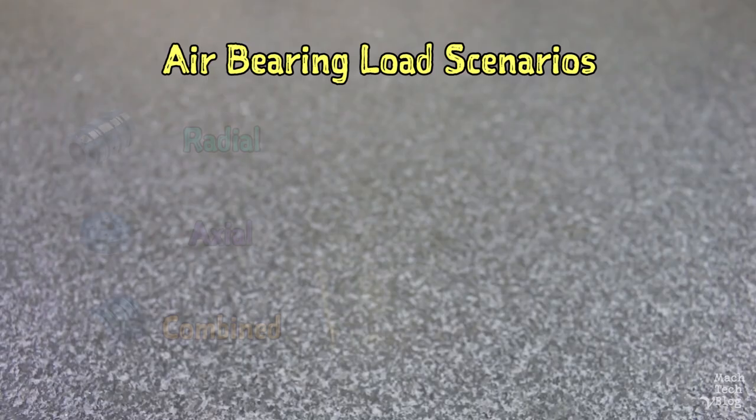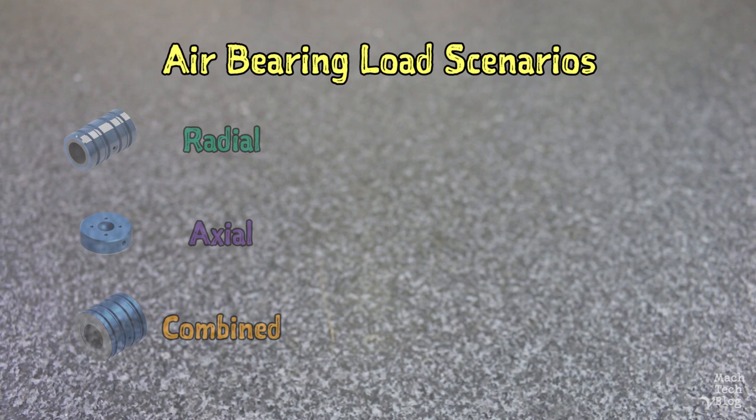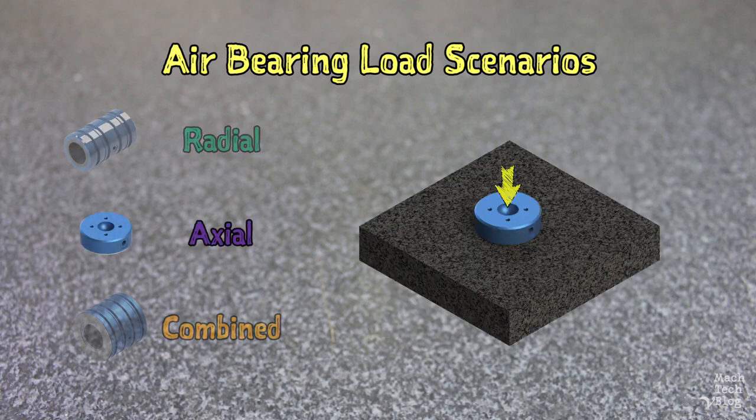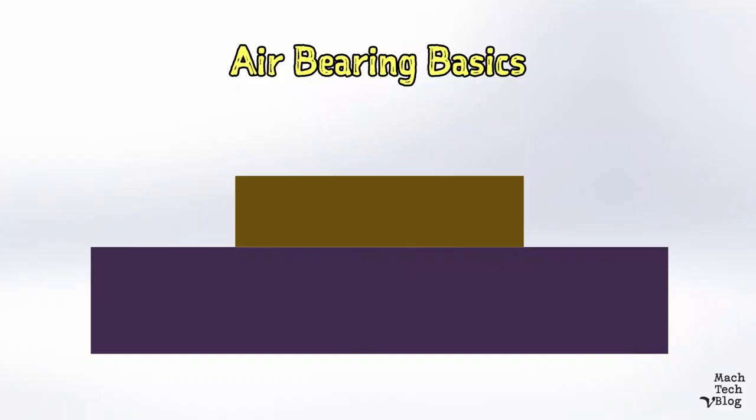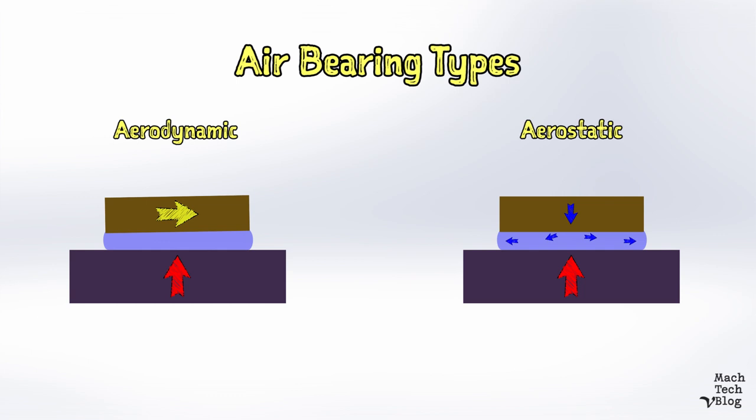Let's take a step back. Like all bearings, air bearings can be designed to support radial loads, axial loads, or some combination of the two. Regardless of the type of load they're designed to support, all air bearings work by forcing pressurized air into a narrow gap between two surfaces. There are two categories, aerodynamic and aerostatic, with the difference being how air is introduced into the gap.